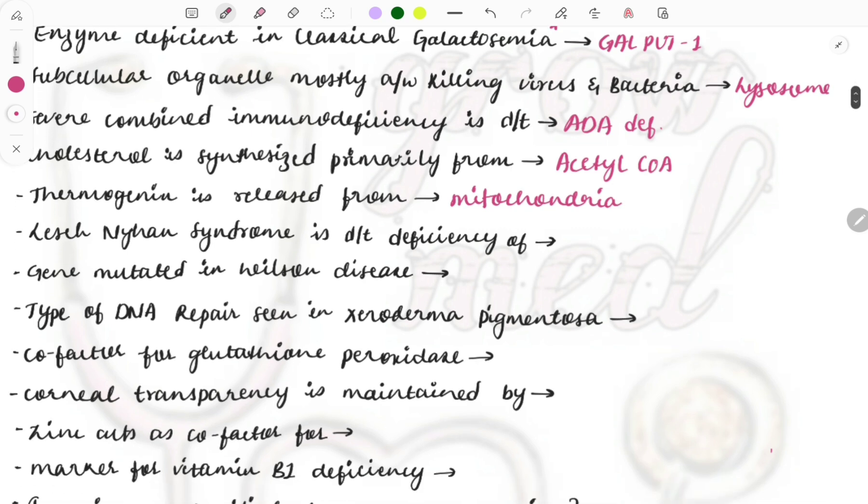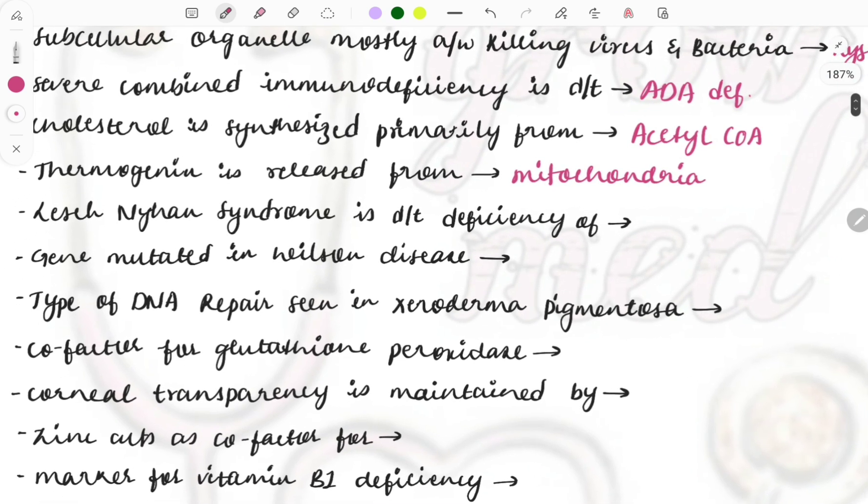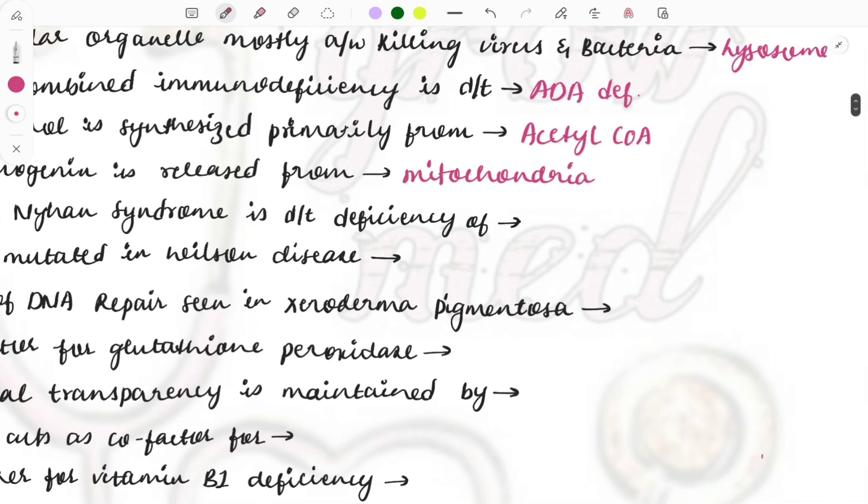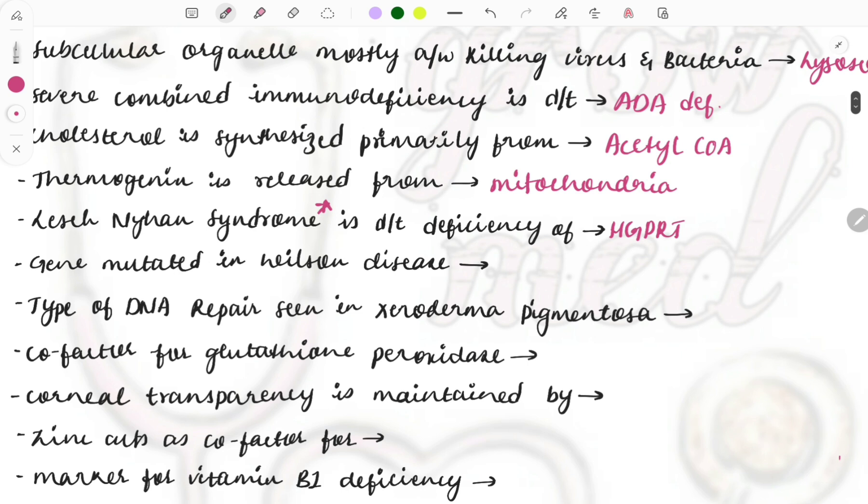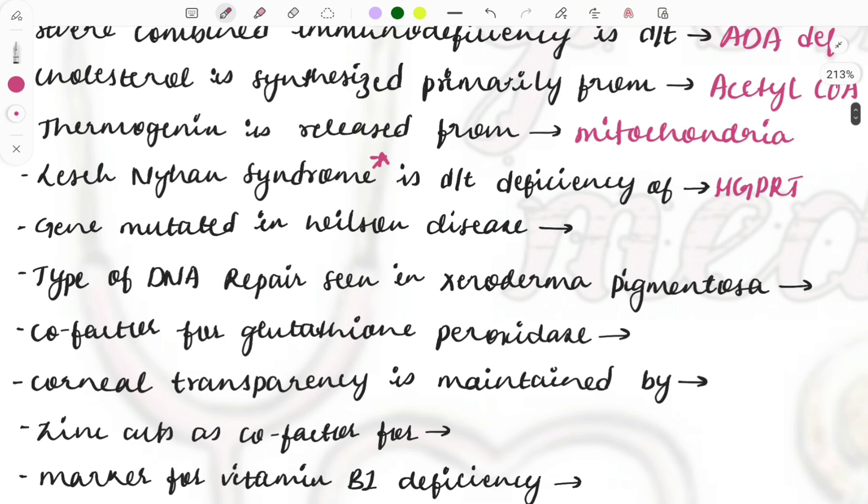Lesch-Nyhan syndrome occurs due to deficiency of which enzyme? It is HGPRT. Again note it down - this is also an important topic. Questions are asked on the enzyme deficient and clinical features like self-mutilating behavior. It is X-linked recessive and males are most commonly affected. This is a disease of purine metabolism - uric acid will be increased and will be causing these features. A must-do topic.